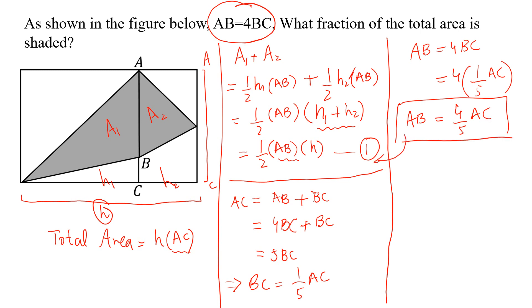We will put this in equation 1. So the shaded part will be equal to A1 plus A2. This will be equal to half of four-fifths AC times H, which simplifies to two-fifths AC times H, where this is the total area.